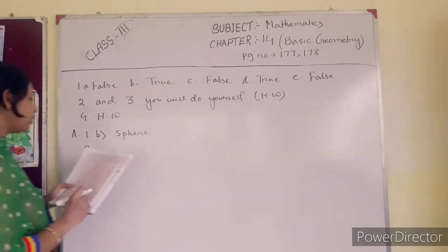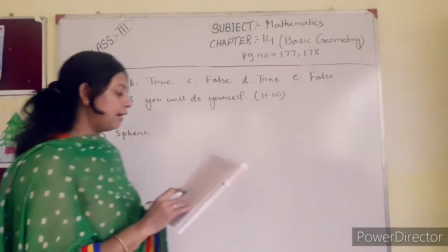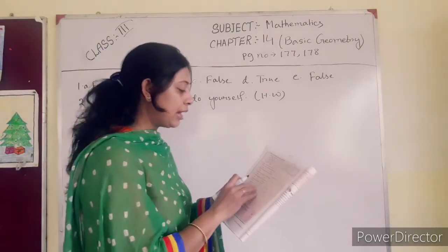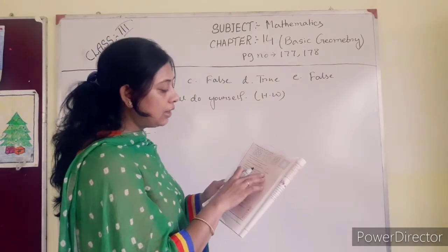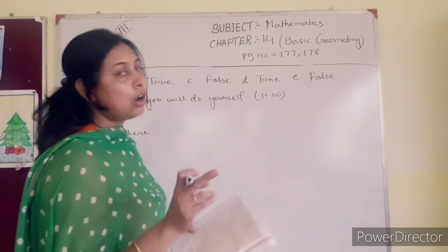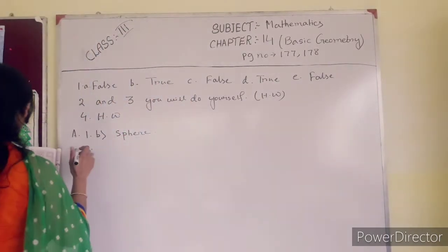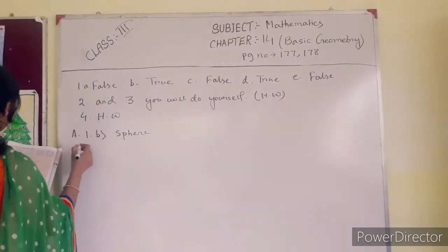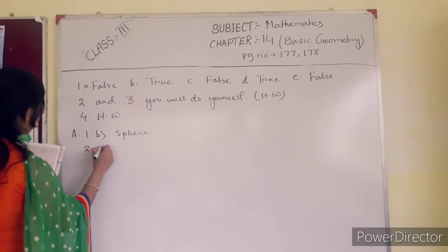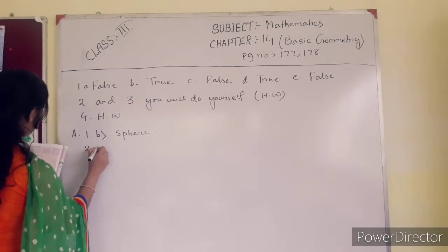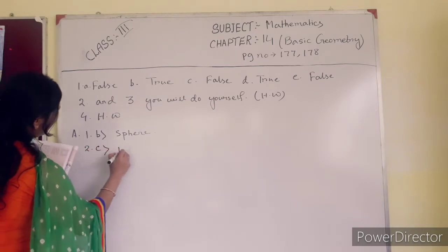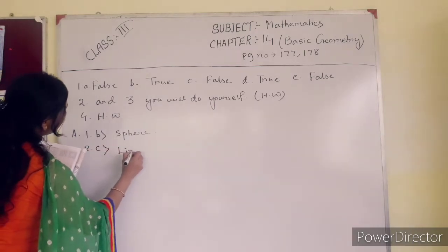Number 2: which of the following has a definite length — a line, a ray, or a line segment? Of course, a line segment has a definite length. So the answer is C, line segment.